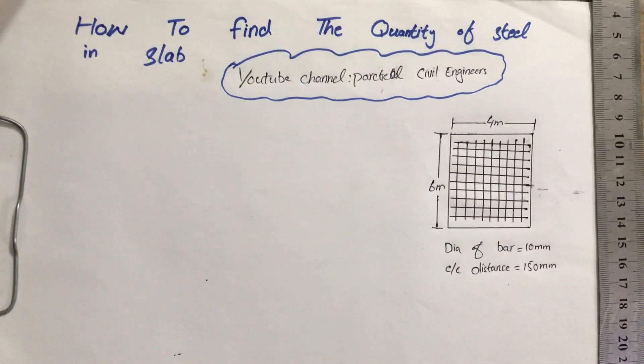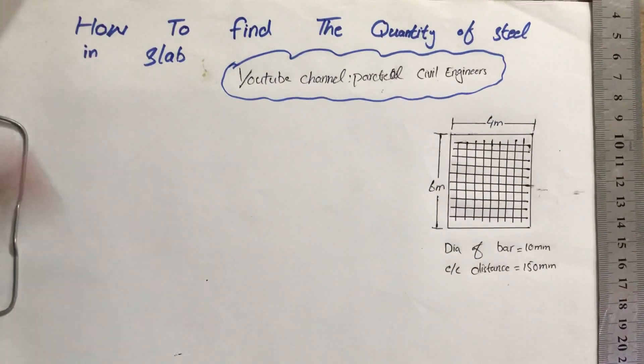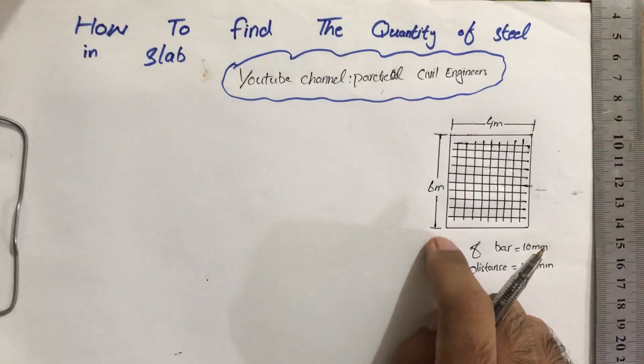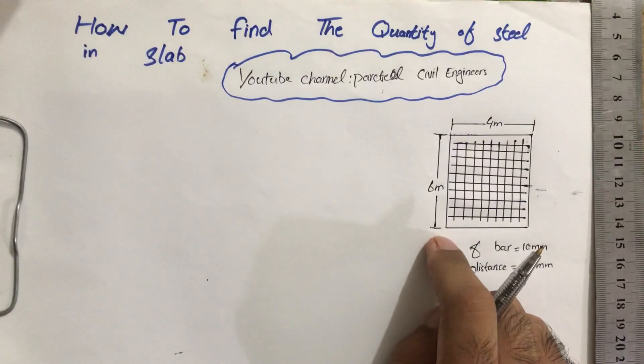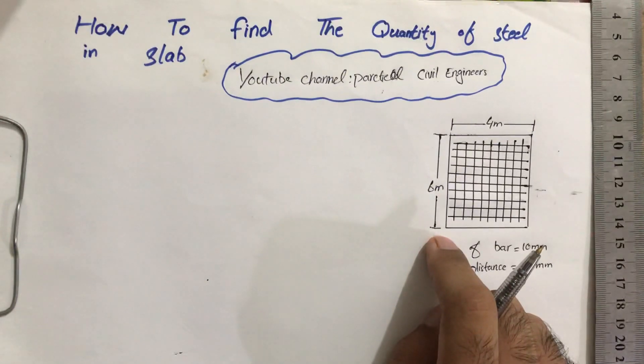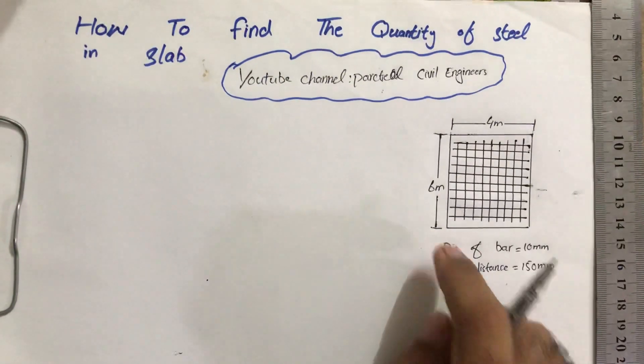Welcome to my YouTube channel. Today I am going to discuss how to find the quantity of steel in a slab. Suppose we have a slab with a length of six meters and a width of four meters. How can we find the quantity of steel in this slab?